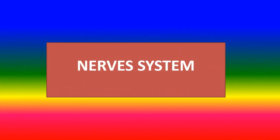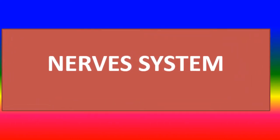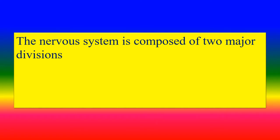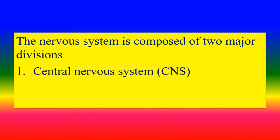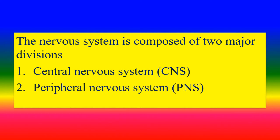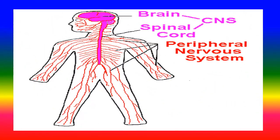The nervous system is composed of two major divisions: first, the central nervous system (CNS), and second, the peripheral nervous system (PNS). The brain and spinal cord together form the central nervous system, while the peripheral nervous system connects the rest of the body.